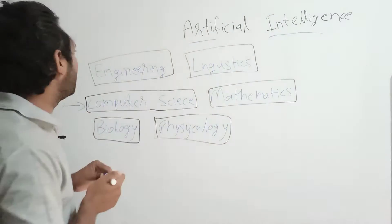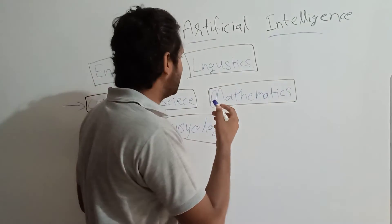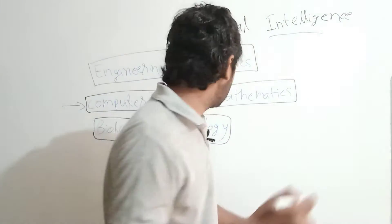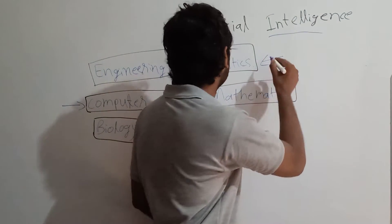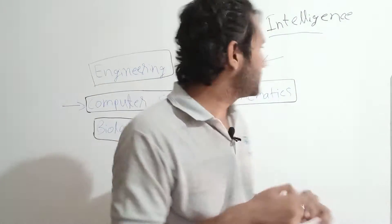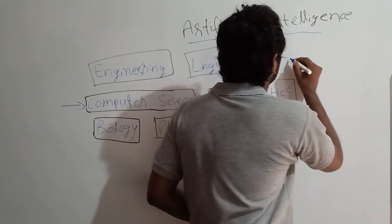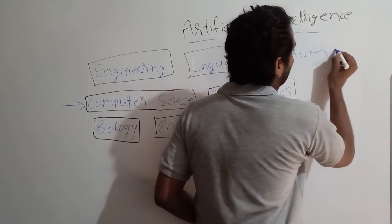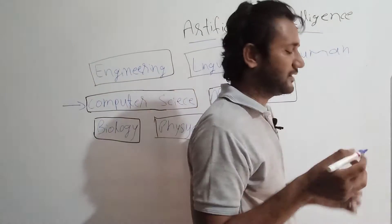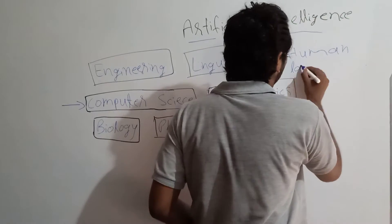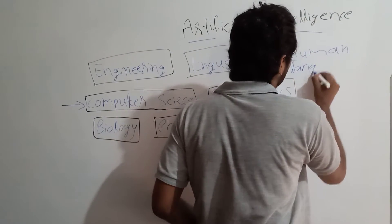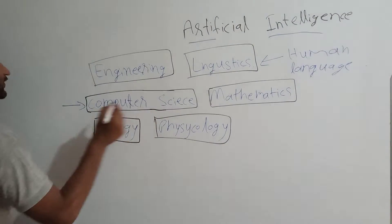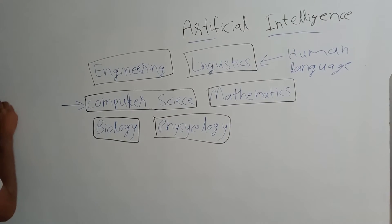Another aspect is linguistics. Linguistics means human language — like English or any other human language. Computer science uses the programming language, while linguistics deals with natural human language.